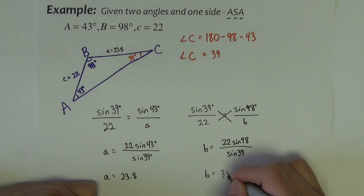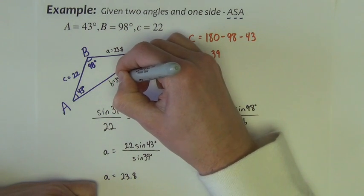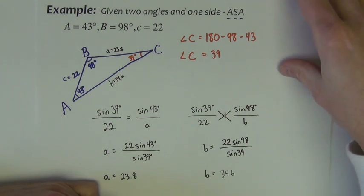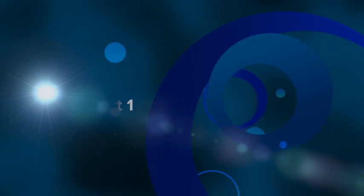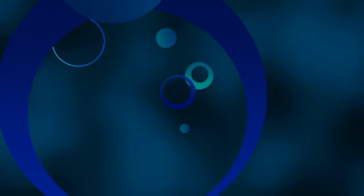And little b is 34.6. And just make a quick check and make sure the biggest angle is across from the longest side, smallest side across from smallest angle, etc.